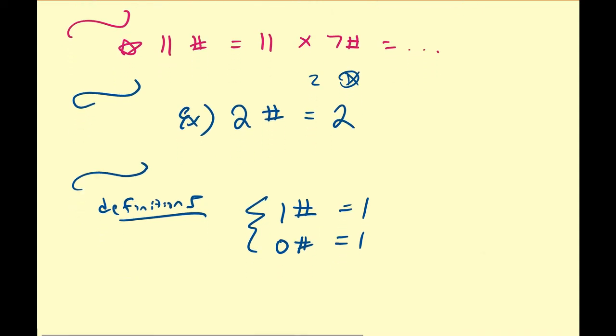So that's pretty much what a primorial is: the product of prime numbers less than or equal to a specified number, related to the factorial. In terms of applications, primorials are directly connected to the set of prime numbers, which have several applications. However, primorials are not as well-known or investigated as factorials, which is probably why the primorial function isn't as famous yet.